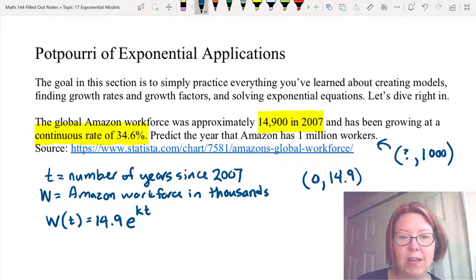And we actually do know k, we have a continuous growth rate of 34.6. So let me actually just put that in here. It's going to be e^(0.346t). So we've got a model.